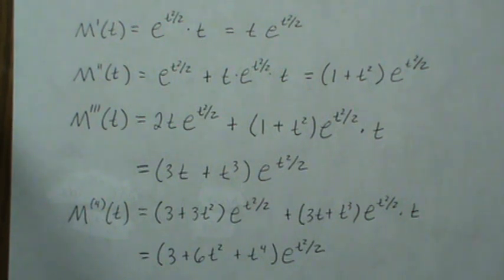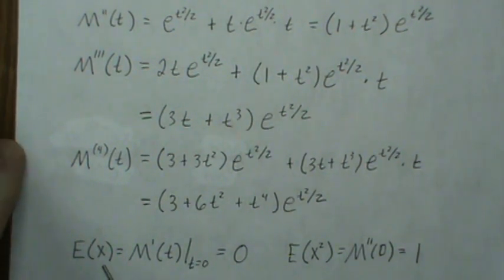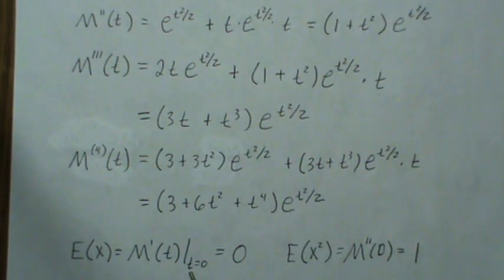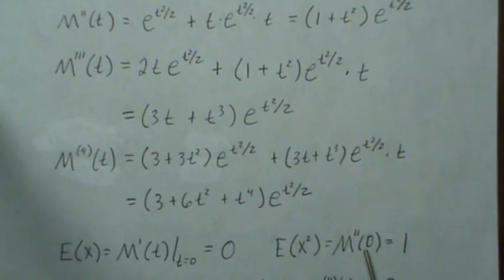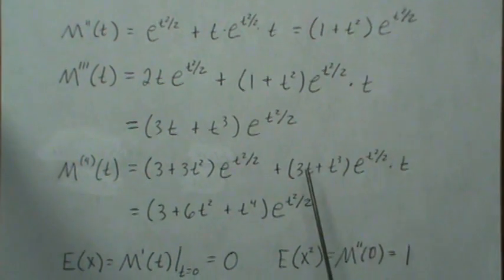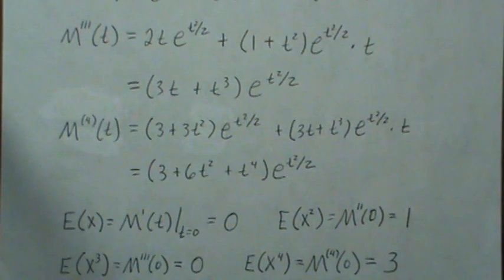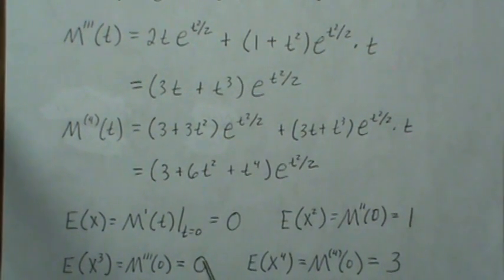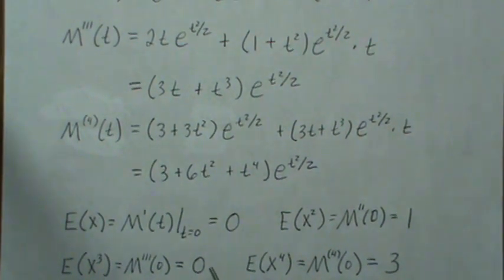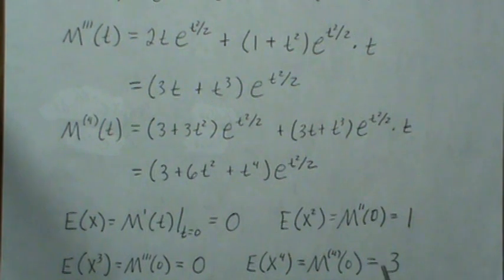So then this becomes plugging in zero for each of these that we just determined. The first moment is the first derivative of the moment-generating function evaluated at zero, and that is zero. The second moment is the second derivative evaluated at zero, and we get one. The third moment — plug in zero — the whole thing is zero. It turns out every odd moment is zero. And then the fourth moment — plug in zero — we get three. So the fourth moment is three.